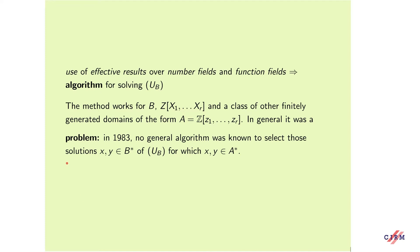The second step is to use effective results over number fields and function fields to get an algorithm for solving this unit equation. The method works for B itself, for polynomial rings over Z, and a class of other finitely generated domains. In general, it was a problem at that time that no general algorithm was known to select those solutions from B* for which X and Y belong to A*.